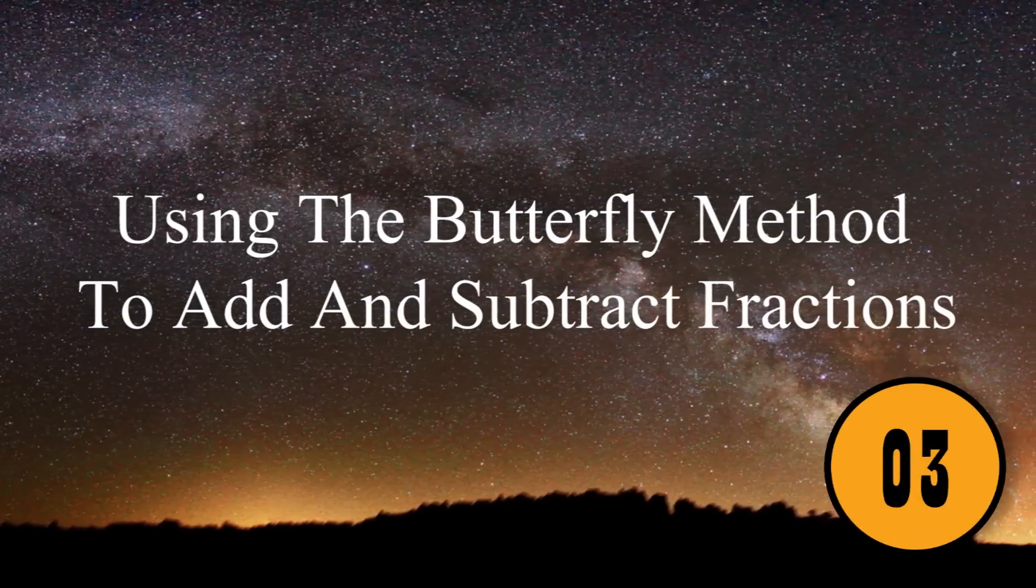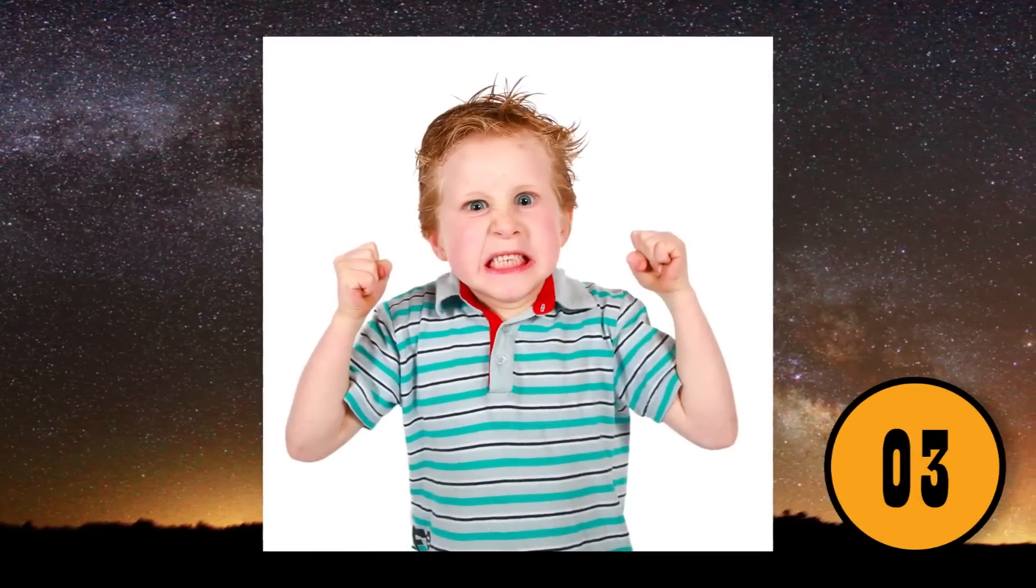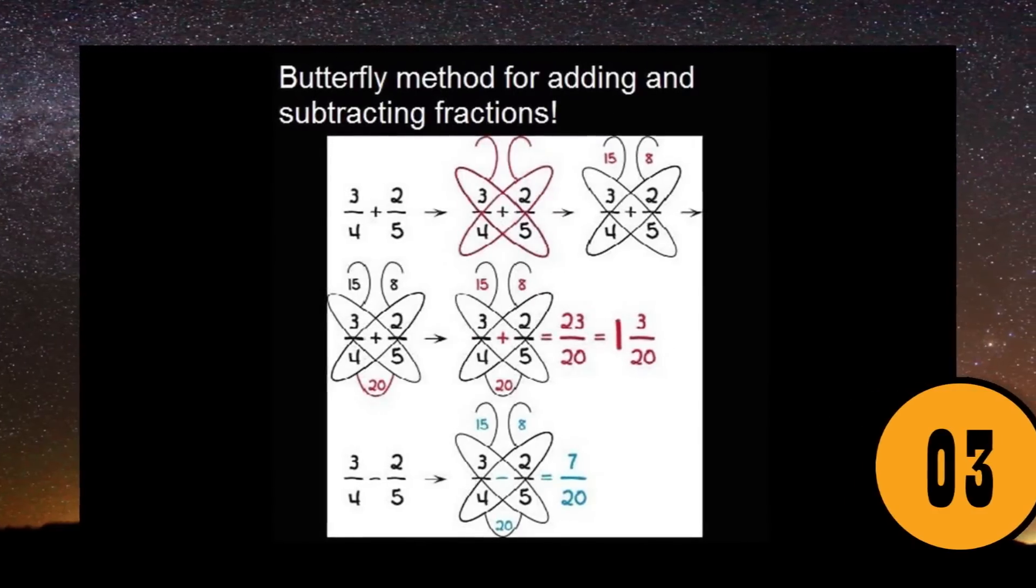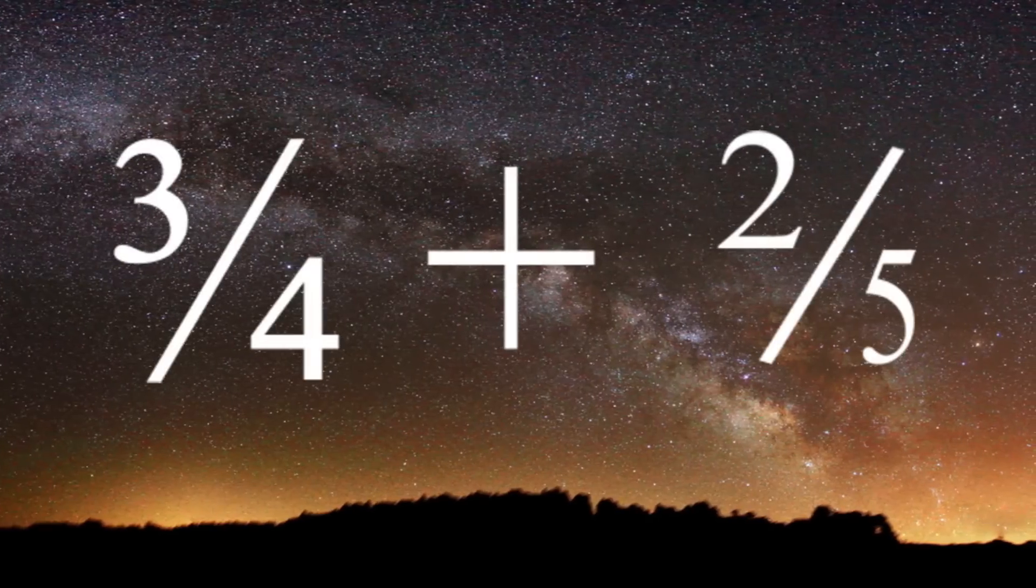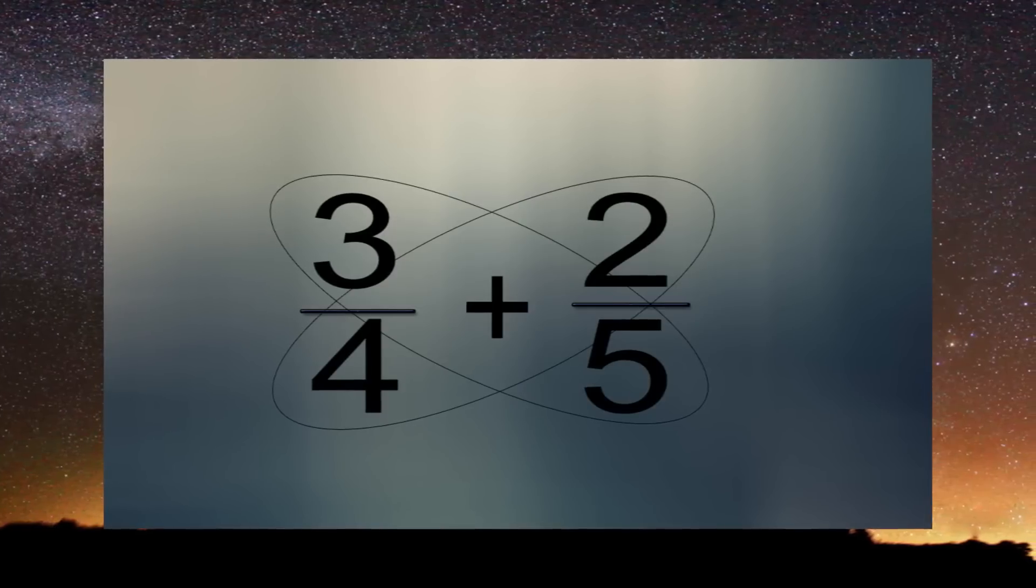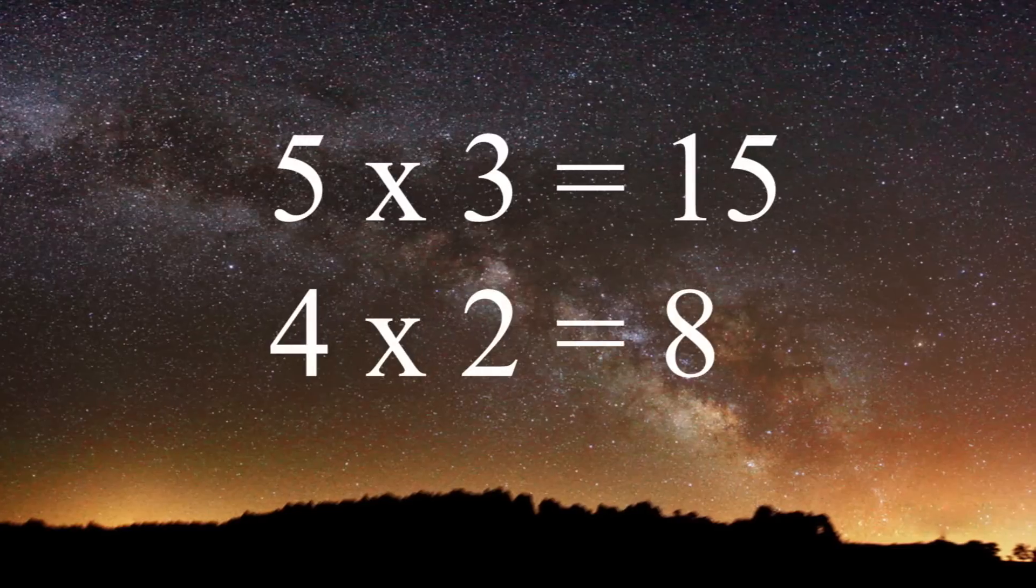3. Using the Butterfly Method to Add and Subtract Fractions. Adding and subtracting fractions can be difficult if the denominators aren't the same. Luckily, the butterfly method can help. If you're trying to add 3 fourths plus 2 fifths, you would circle the numbers diagonally, so the 3 and the 5 would be circled, and the 2 and the 4 would be circled.